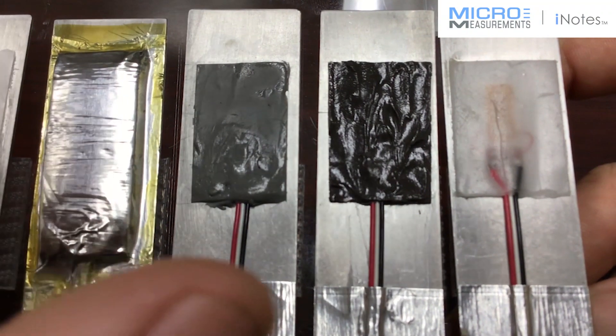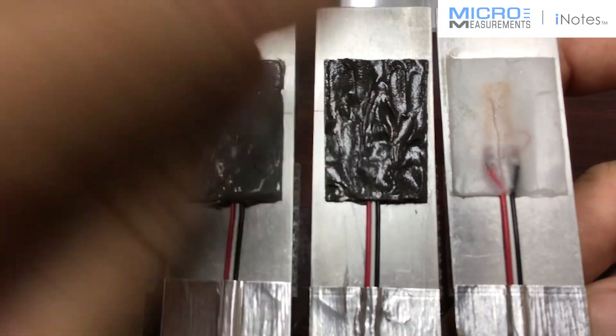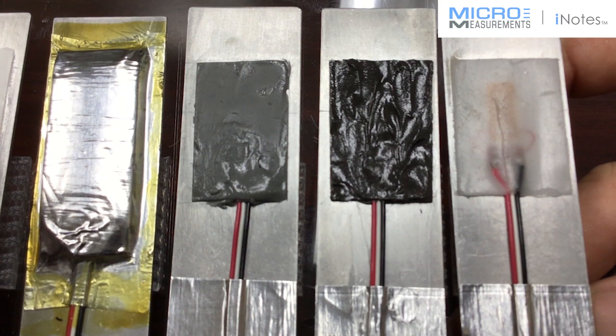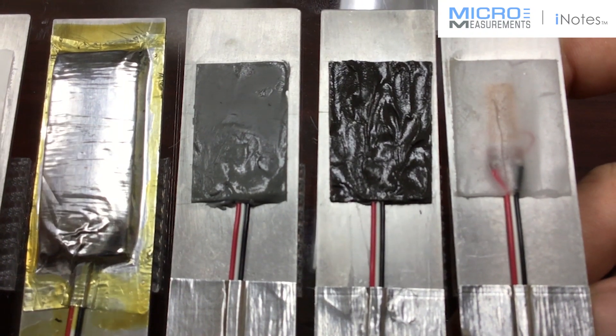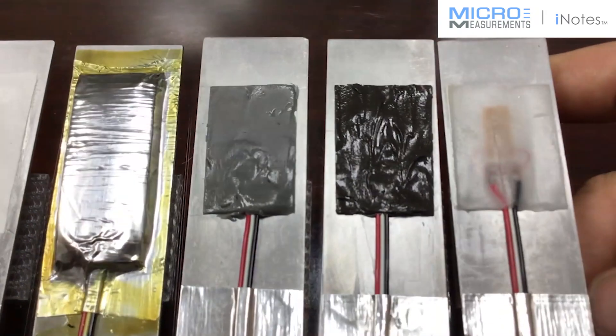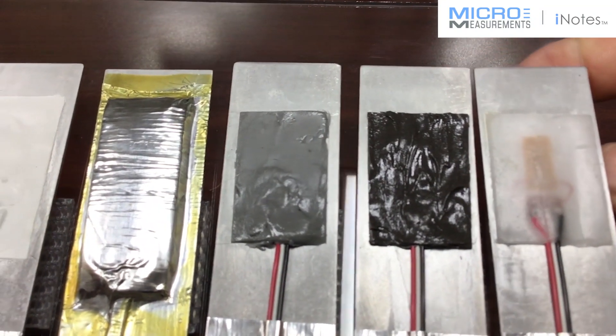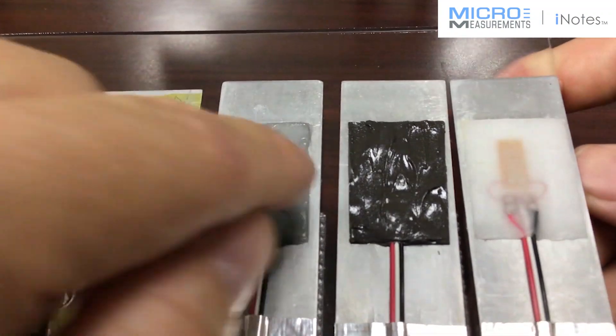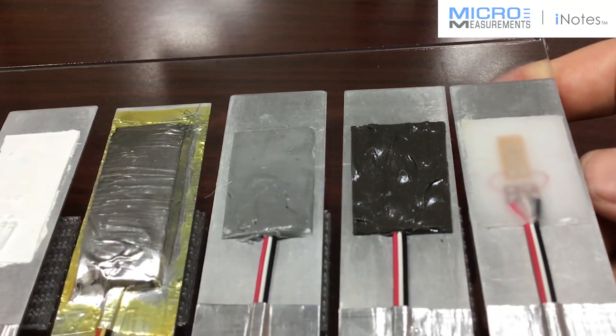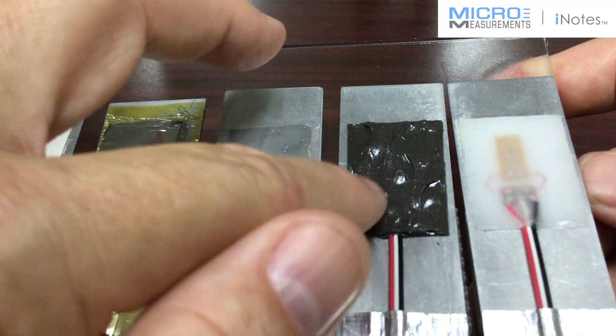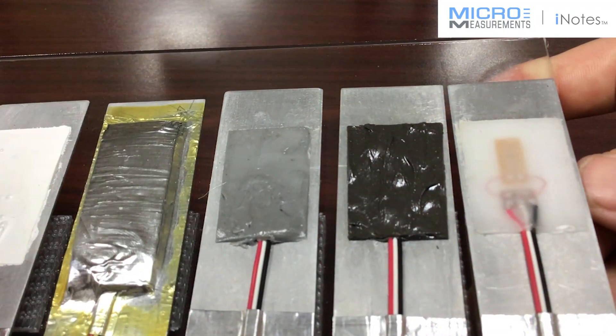Really good in terms of mechanical protection. You could just about hit this thing with a hammer and the gauge would be protected underneath. But also very good chemical and moisture barrier too. So when you're looking for an environmental coating that cures at room temperature and maybe you need some mechanical protection and moisture protection, this is a very good coating system for protecting the gauges in those types of environments.